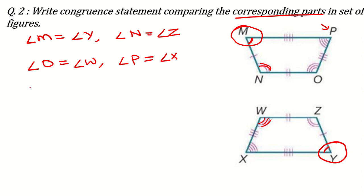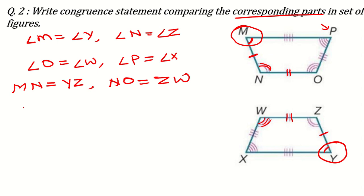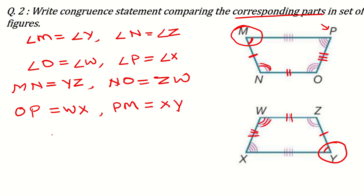Corresponding parts means same marker, different figure. For the sides: side MN has one tick mark, and side YZ also has one tick mark, so MN equals YZ. Side NO has two tick marks and ZW has two tick marks, so NO equals ZW. Three tick marks are on side OP, and WX also has three tick marks, so OP equals WX. Side PM has four tick marks and XY has four tick marks, so PM equals XY.